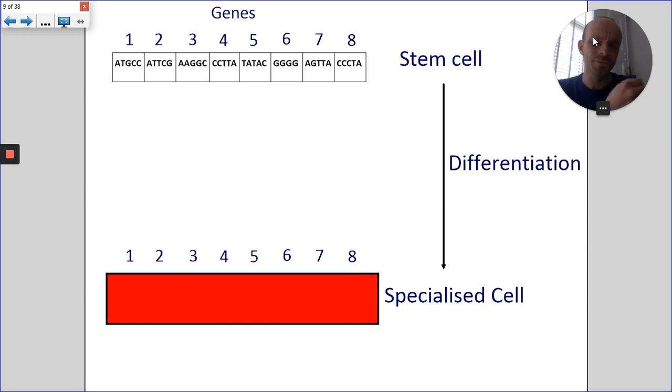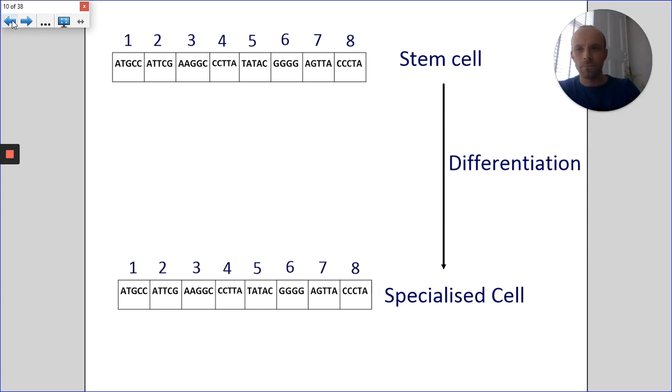And then for gene two, the order of the bases is ATTCG. So how would the order of the bases be different in a specialized cell? Well, they wouldn't. They'd be exactly the same. The order of the bases in a stem cell is exactly the same to the order of the bases within a specialized cell.